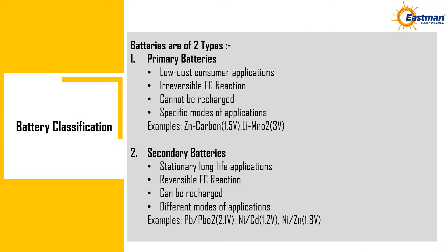Battery Classification. Batteries are of two types. The first type is primary batteries. Primary batteries are for low-cost consumer applications. They have irreversible electrochemical reactions and cannot be recharged. Primary batteries have specific modes of application. Examples include zinc carbon at 1.5 volts and lithium manganese dioxide at 3 volts.